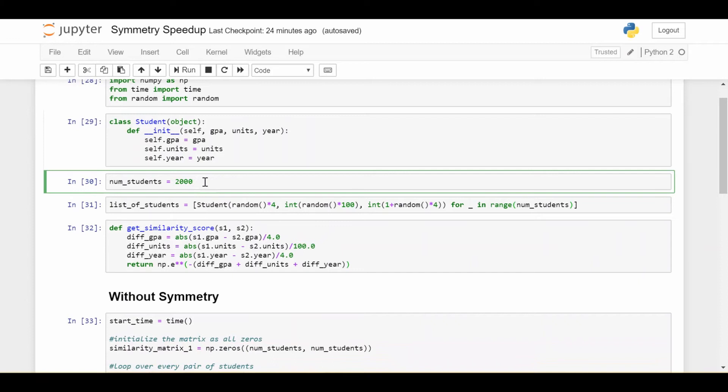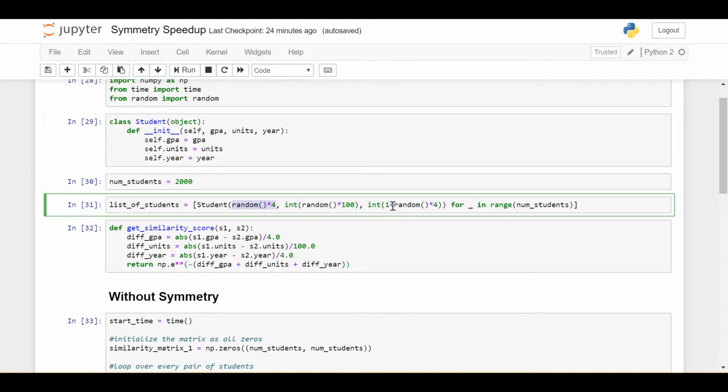Let's say we have 2,000 students we're dealing with. And we create a list of 2,000 students with just giving each one a random GPA, giving them a random number of units between 0 and 100, and a random year between 1 and 4.